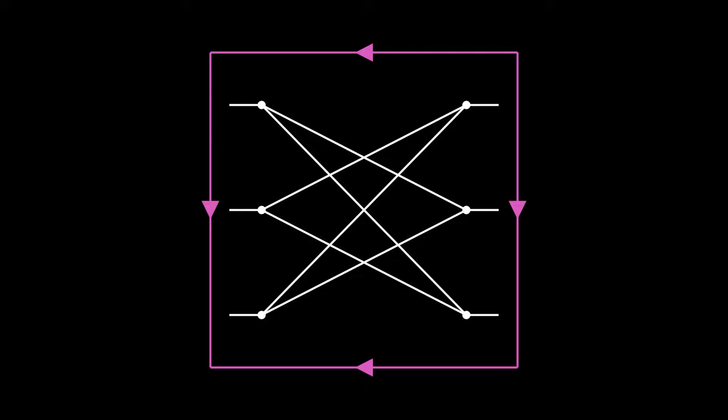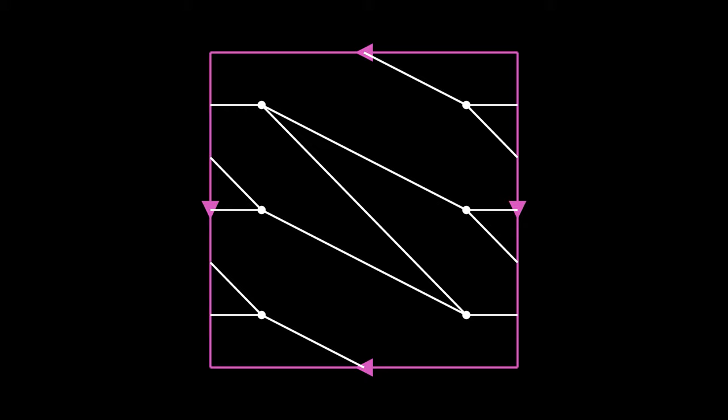K3,3, which is nonplanar, can actually be embedded on a torus. So we'll take K3,3 here, put it on our representation of a torus, take the horizontal edges, go around the boundary, put these other edges around the boundary, and the last edge vertical on the boundary. This gives us an embedding on the torus.